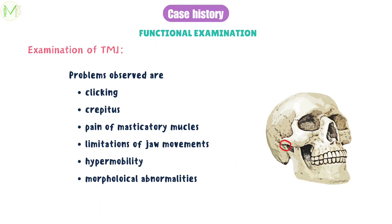Now let's examine the TMJ — the temporomandibular joint. Common problems include clicking sound, crepitus, pain of masticatory muscles, limitation of jaw movements, hypermobility, or morphological abnormalities. There are two classic methods to palpate the TMJ: pre-tragus palpation, where the examiner bilaterally palpates the pre-tragus depression with the index finger while the patient opens and closes the mouth; and intra-auricular palpation, where the small finger is inserted into the ear canal and pressed anteriorly while the patient opens and closes the mouth.